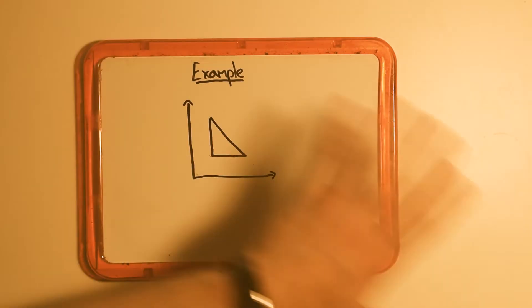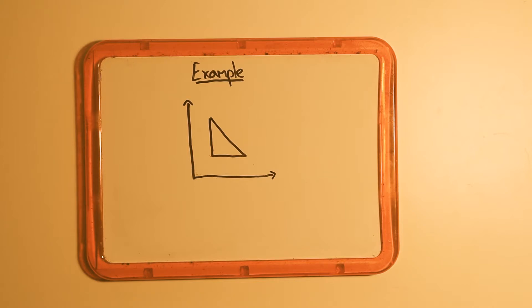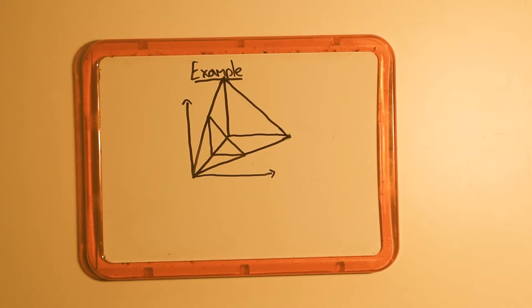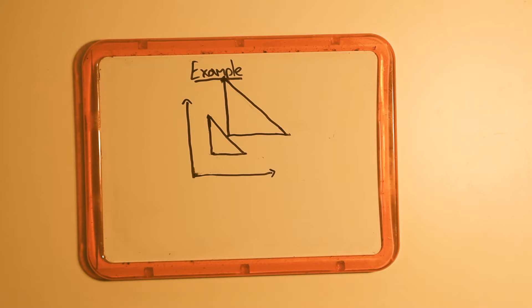If we enlarge the shape by a scale factor of 2 around the origin, we double the distance between the origin and each of these points to get the points on the new shape. This gives us the new triangle with points at 2,2, 4,2, and 2,4.